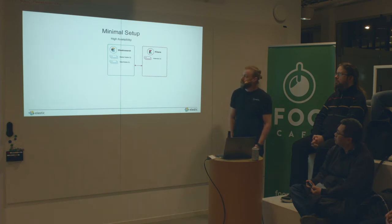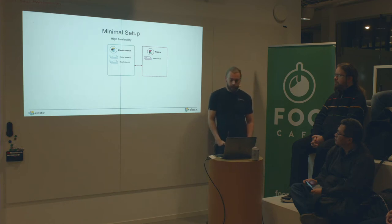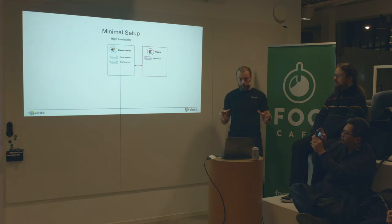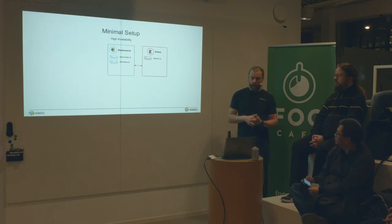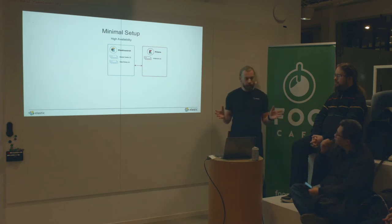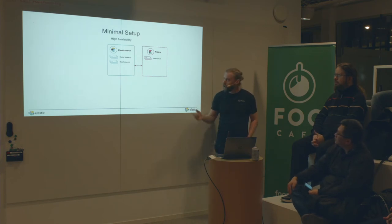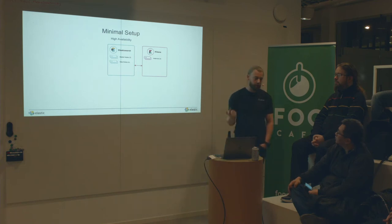If you want to go into production, you need high availability. We recommend having at least three master-eligible nodes. The reason is something called split brain — since Elasticsearch is a distributed system, it's dependent on networking between nodes. If a cable gets disconnected, the remaining master-eligible nodes must be able to reach quorum to elect a new master. Only one is the active master at any time, and the election happens among the master-eligible nodes. So three master-eligible nodes is the minimal production setup.